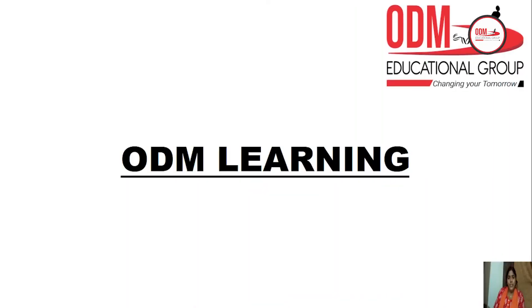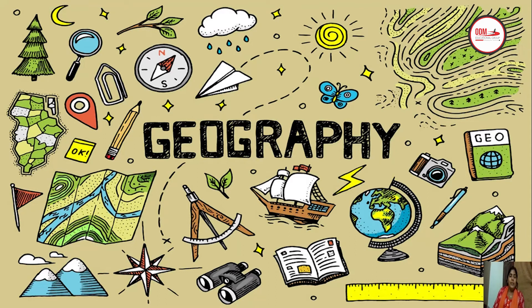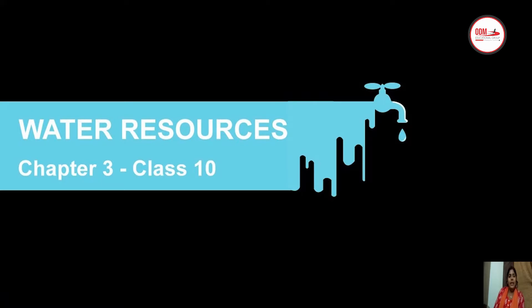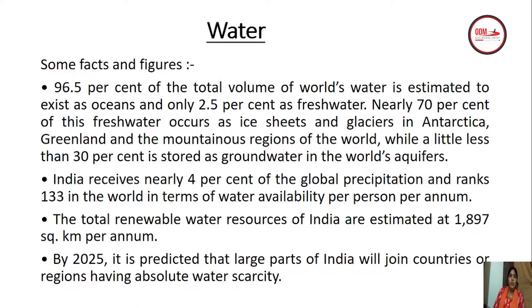Welcome to OEM Learning. In this geography video, we will be learning the third chapter of standard 10 — water resources. Here are a few facts and figures: 96.5 percent of the total volume of the world's water exists as oceans, and only 2.5 percent as fresh water. Nearly 70 percent of this fresh water occurs as ice sheets and glaciers in Antarctica, Greenland, and mountainous regions, while a little less than 30 percent is stored as groundwater in the world's aquifers.